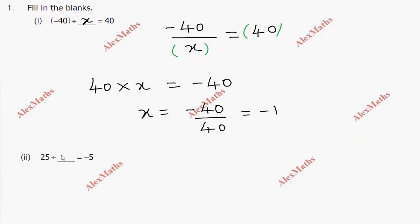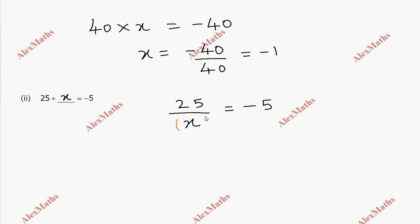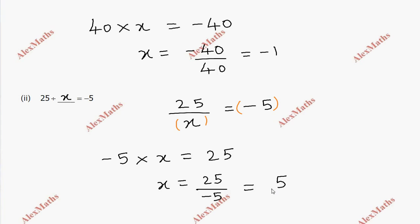Sub-division 2: 25 divided by blank equals minus 5. So 25 divided by one number equals minus 5. Setting up: minus 5 into x equals 25. So x equals 25 divided by minus 5, which gives x equals minus 5.